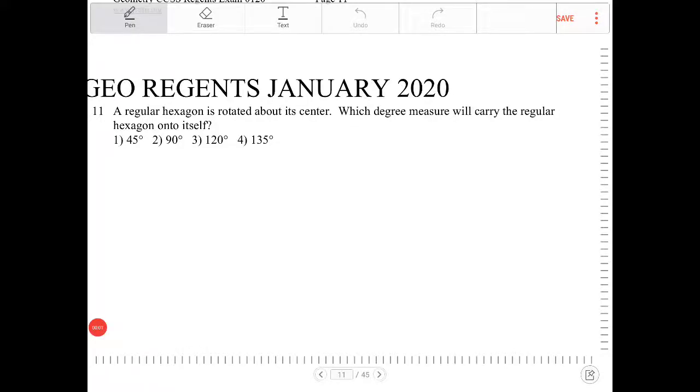The regular hexagon is rotated about its center. Which degree measures will carry the regular hexagon onto itself?